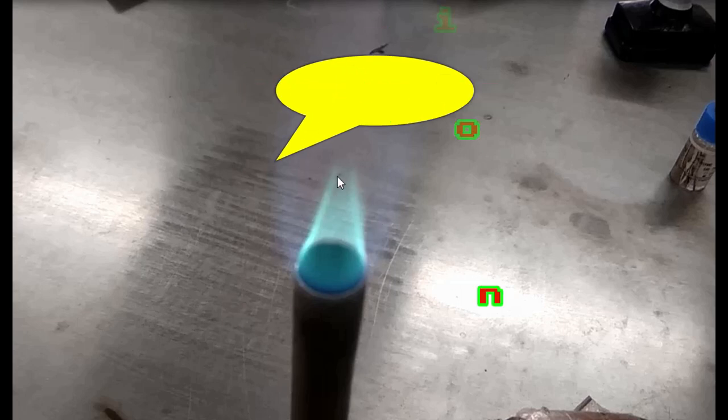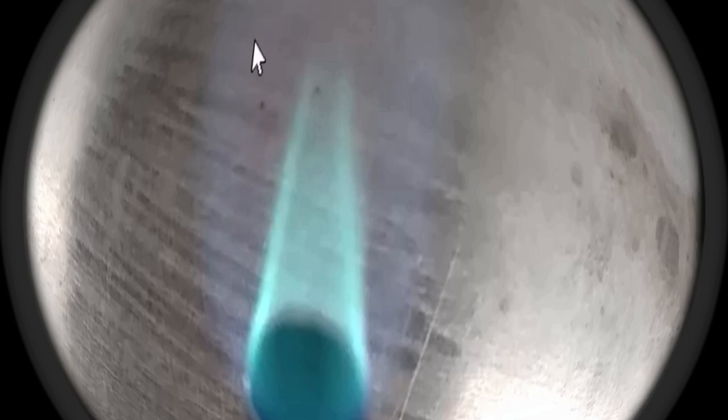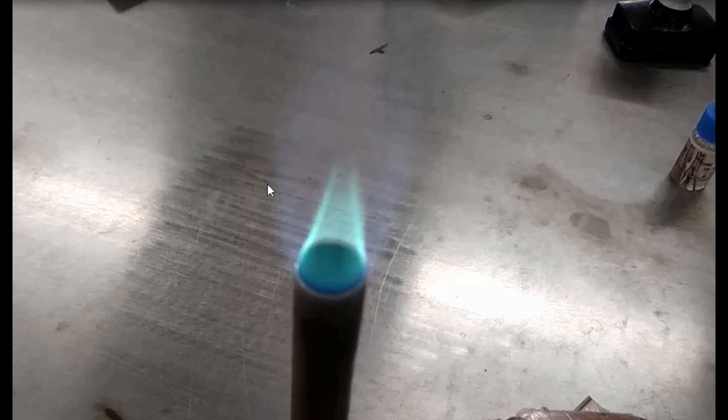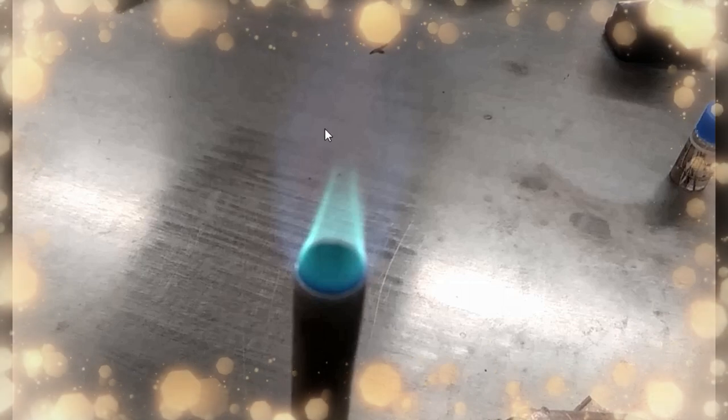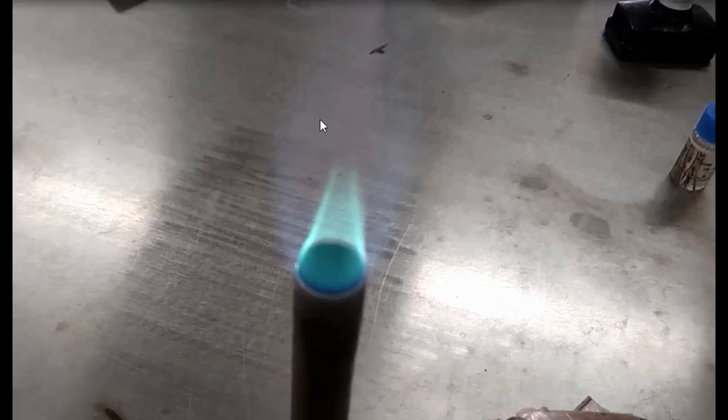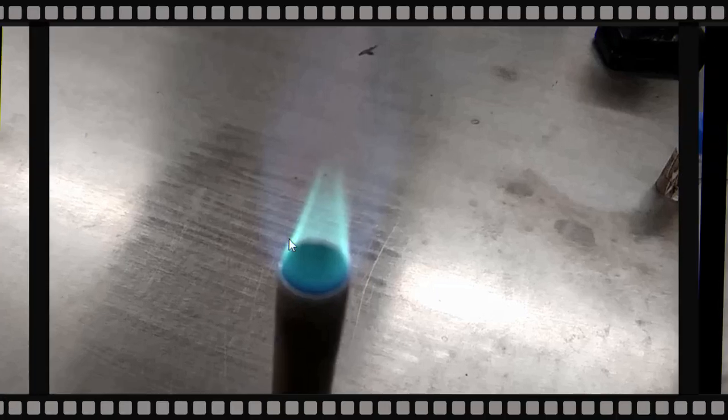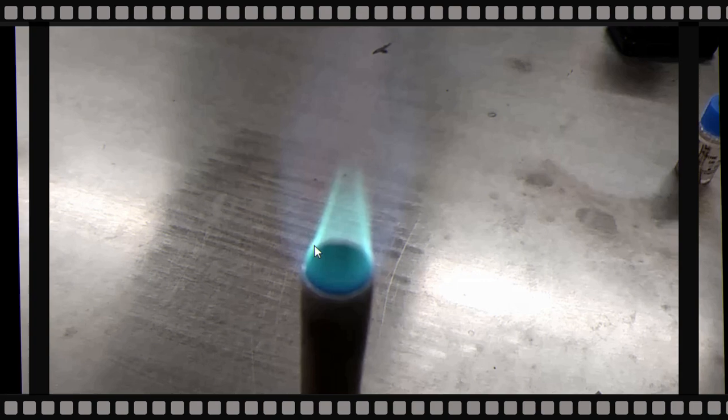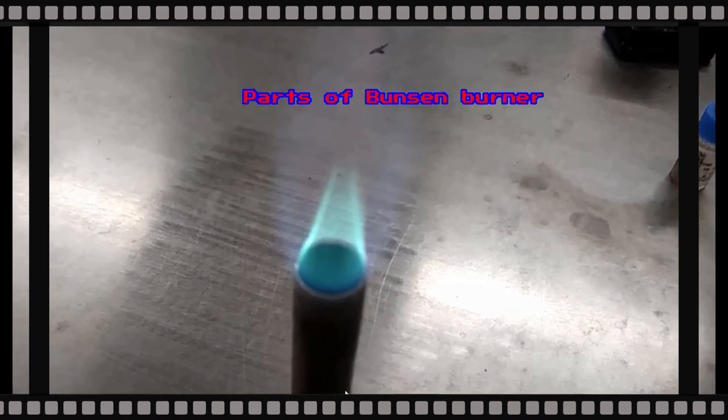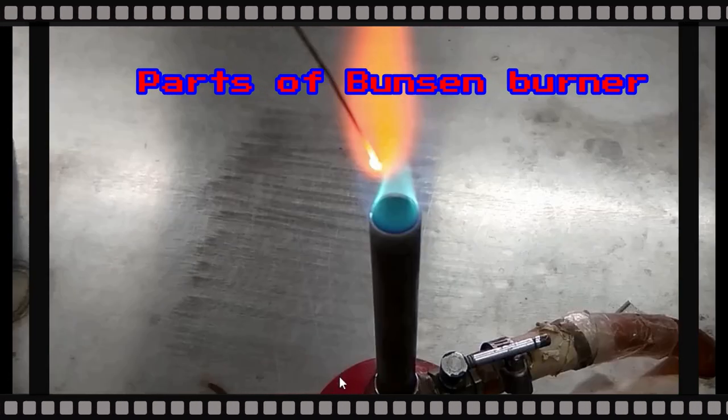A Bunsen burner, named after Robert Bunsen in 1852, is a common piece of laboratory equipment that produces a single open gas flame, which is used for heating, sterilization, and combustion. Now about its parts: it contains a base, this one is the base, gas inlet, this one is the gas inlet.